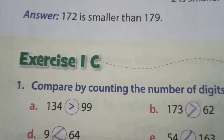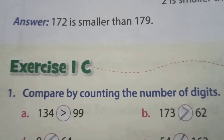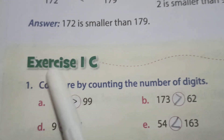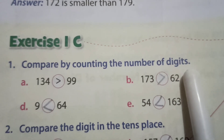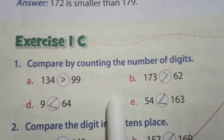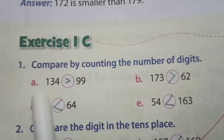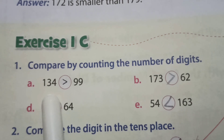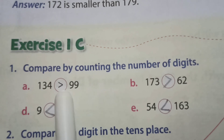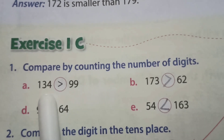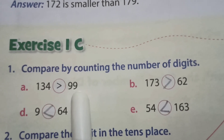Kids, this is our first chapter exercise, number first C. First one question: compare by counting the number of digits. All of you know greater than, less than. A: 134 and 99 — which sign comes here, greater than or less than? Yes, 134 is greater than 99.